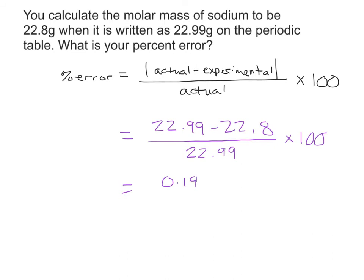This 0.19 represents how wrong we were, how off we were. So if this is the actual value, and this is the value we got, this value is how close we were to the actual answer. We were off by 0.19 grams.